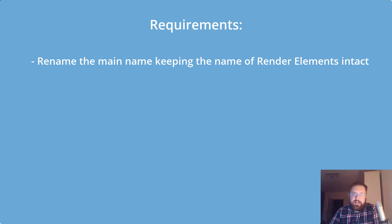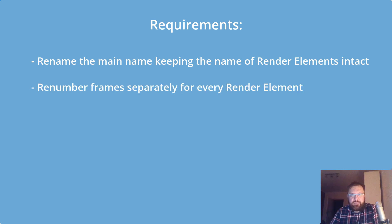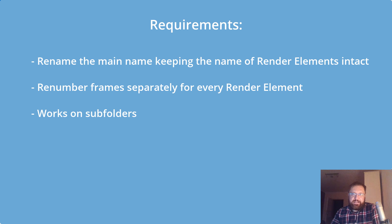It also wouldn't be good if you had to rename every render element separately — that is counterproductive. The second thing is that it should be able to renumber the frames for every render element or AOV separately in one batch. The third requirement is that very often we render our render elements to subfolders, especially Maya or Modo users in my experience at GarageFarm.net, so the program has to be able to find all the files in subfolders and rename them with one batch.